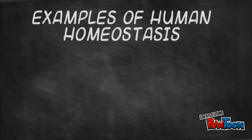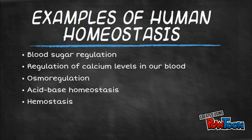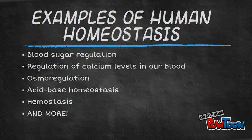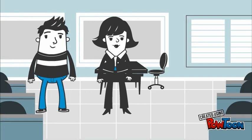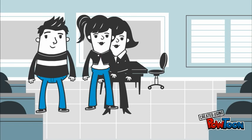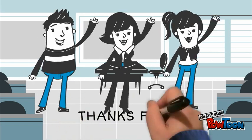We only looked at one example of how stable levels of a variable — in our case, temperature — is maintained in our body. But as you can see, homeostasis occurs with many other variables, ensuring that our bodies function at their optimal condition. I hope you learned a lot from this video, and will continue to learn all about homeostasis. Thanks for watching!